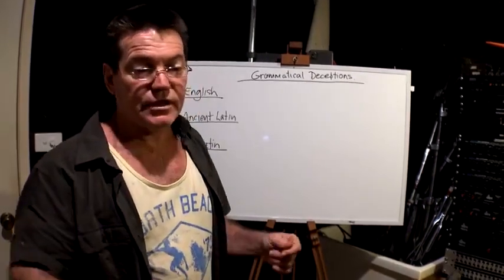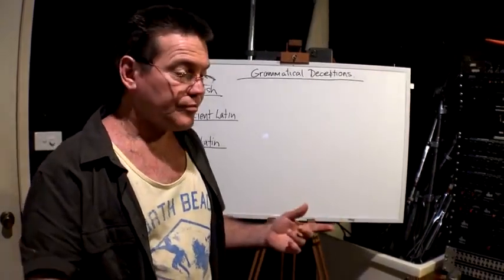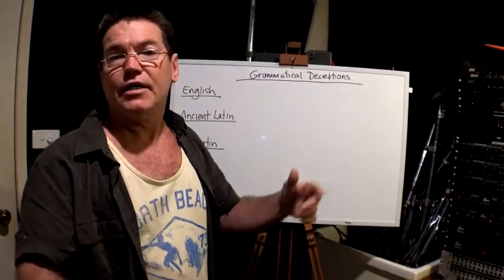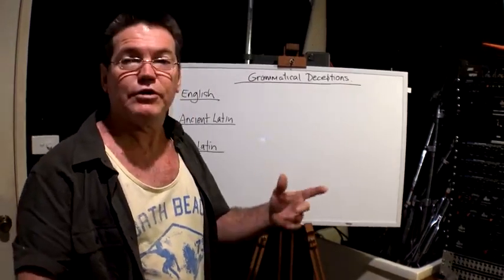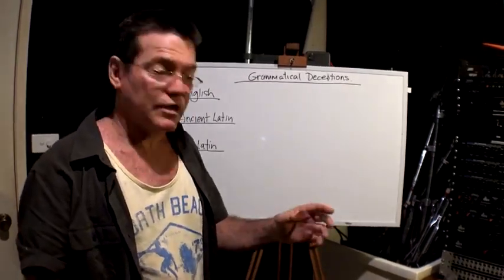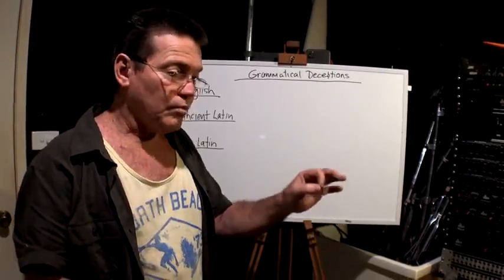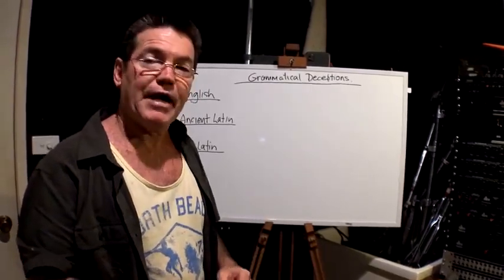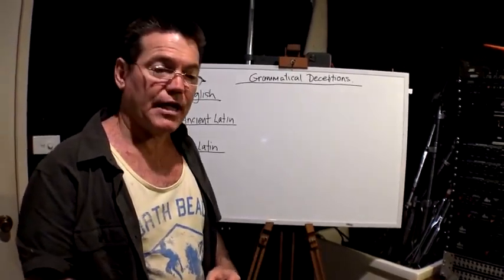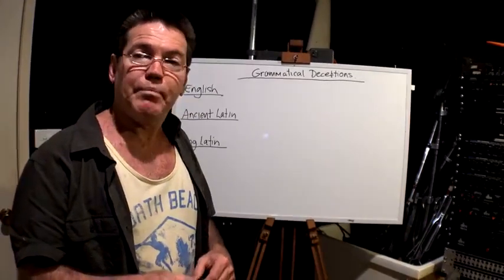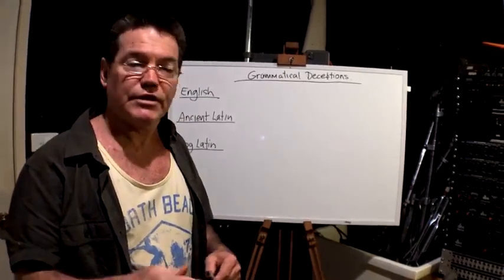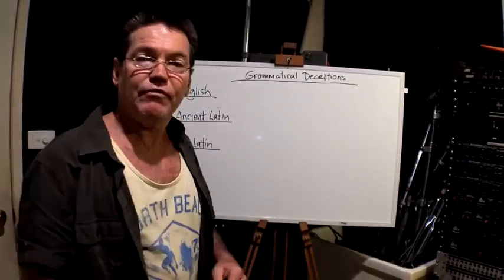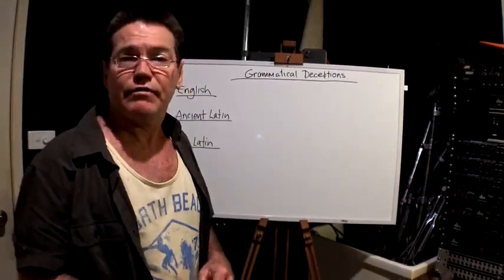Shillings, pennies, florins — it was all based on an amount of silver, and the pound note was a representation of one pound of silver. So you could take the pound note in and redeem it for one pound of silver.